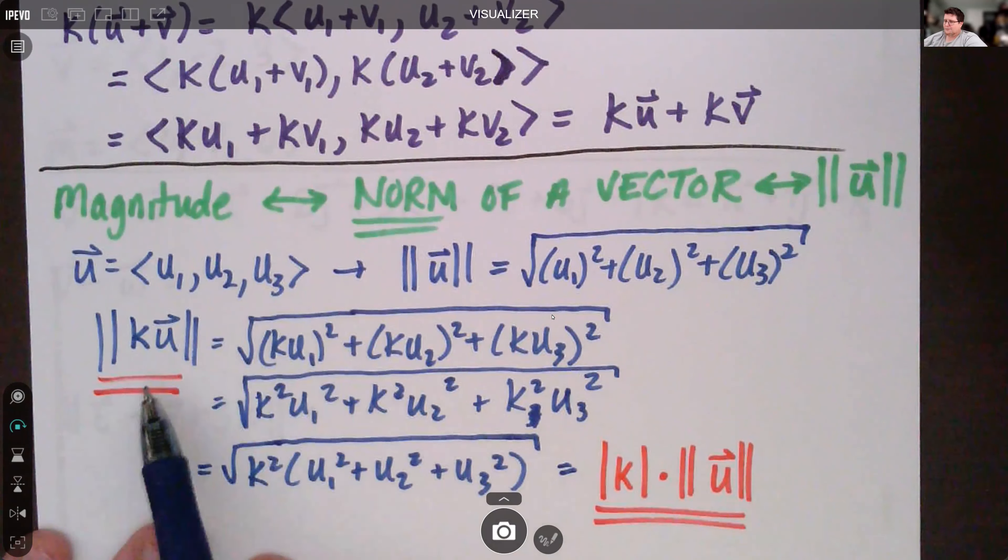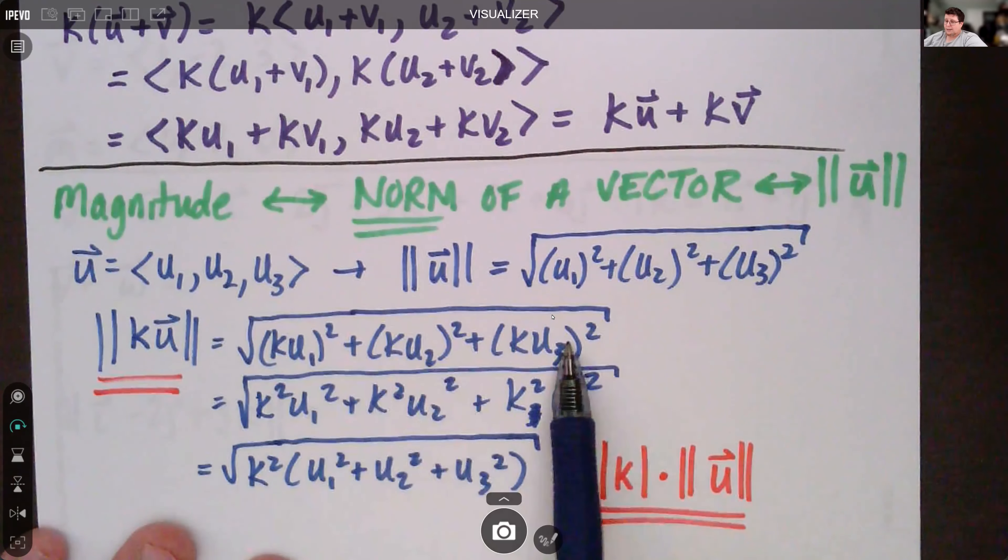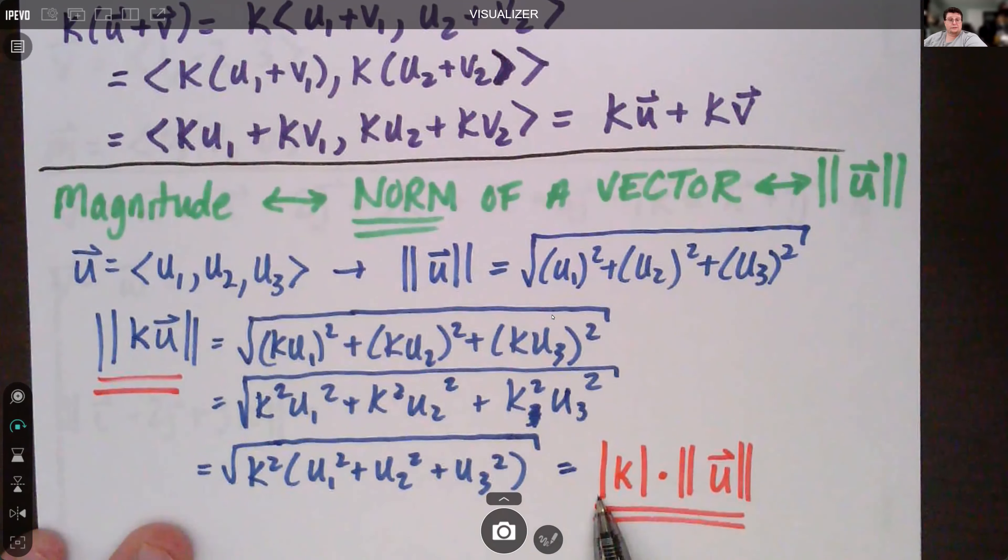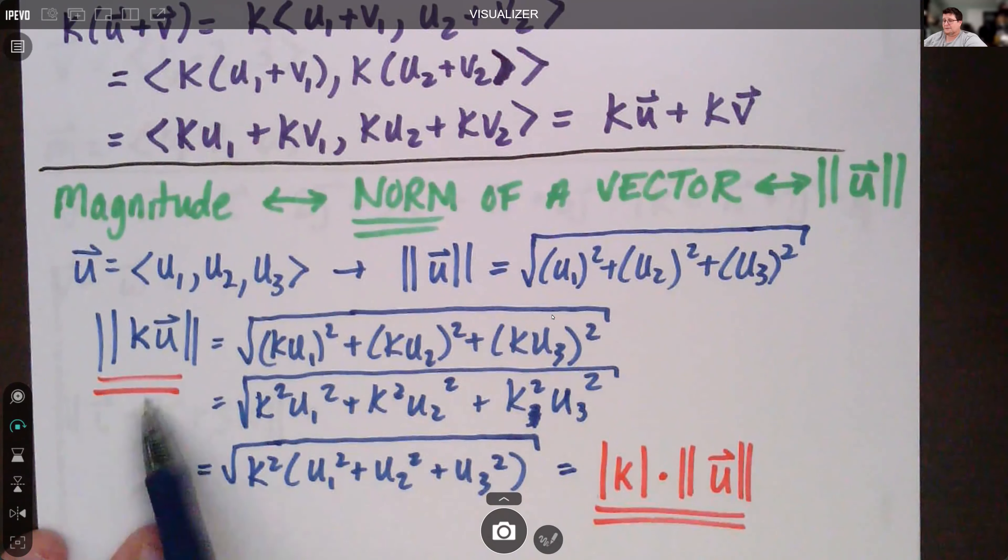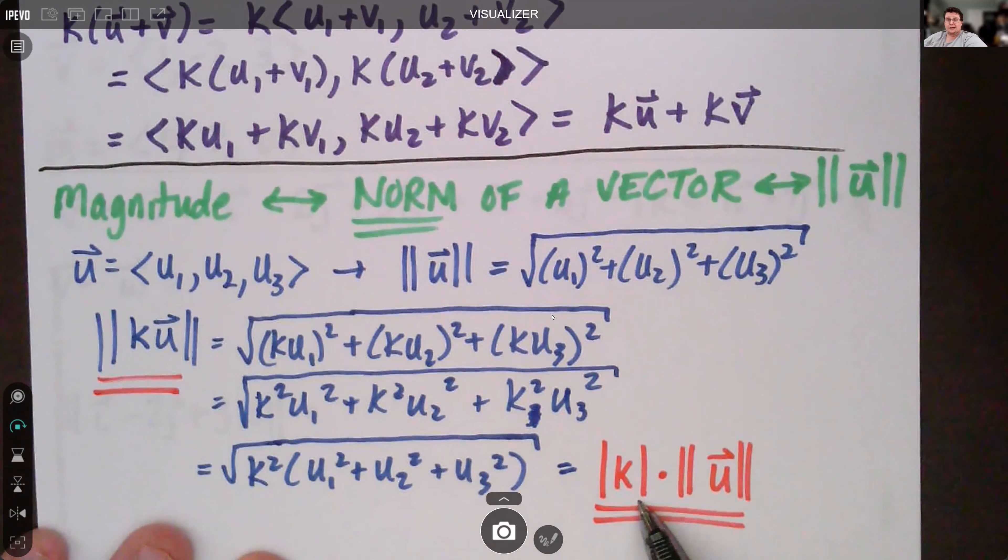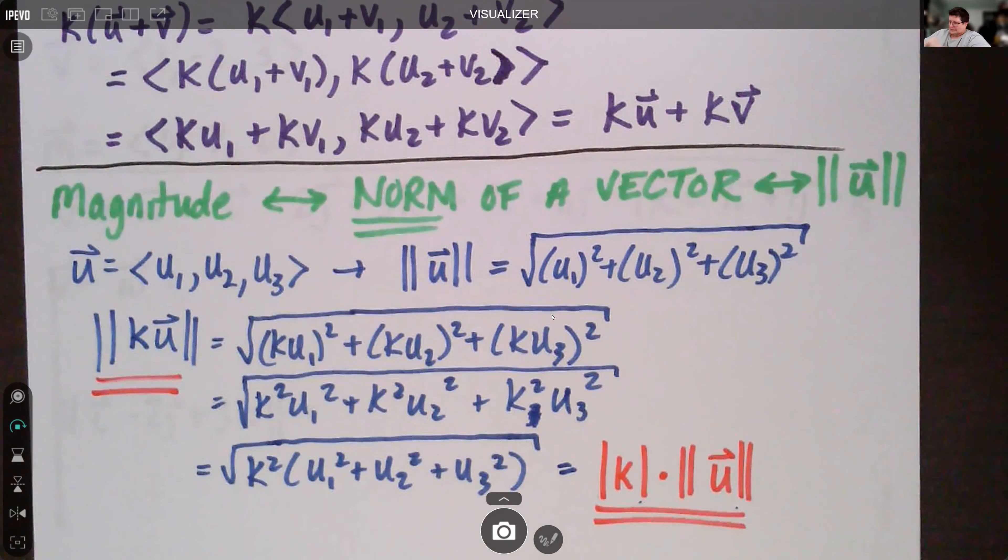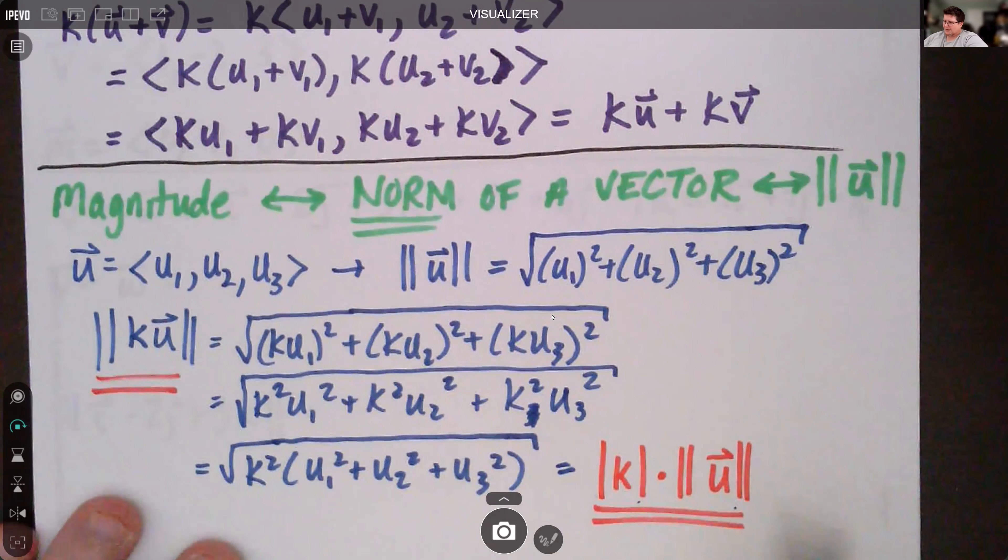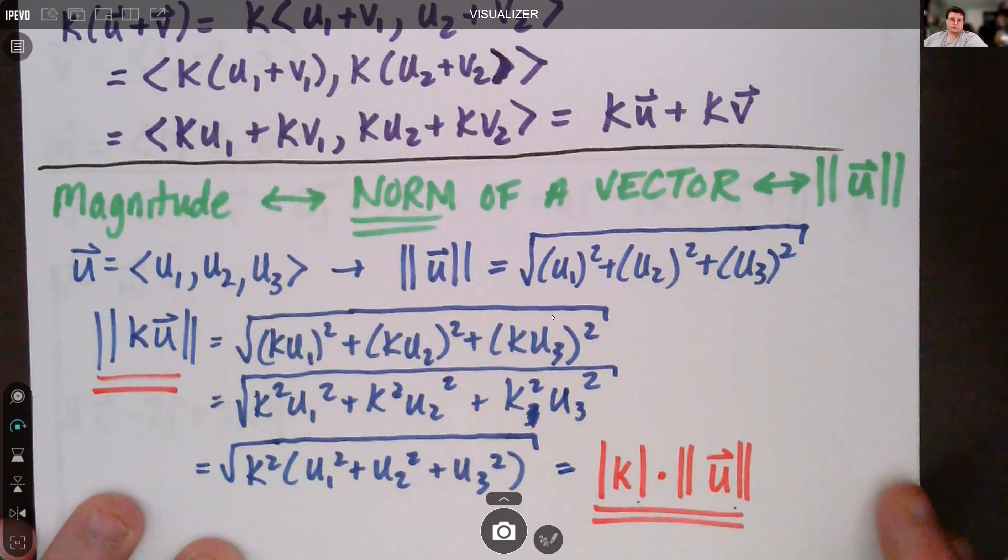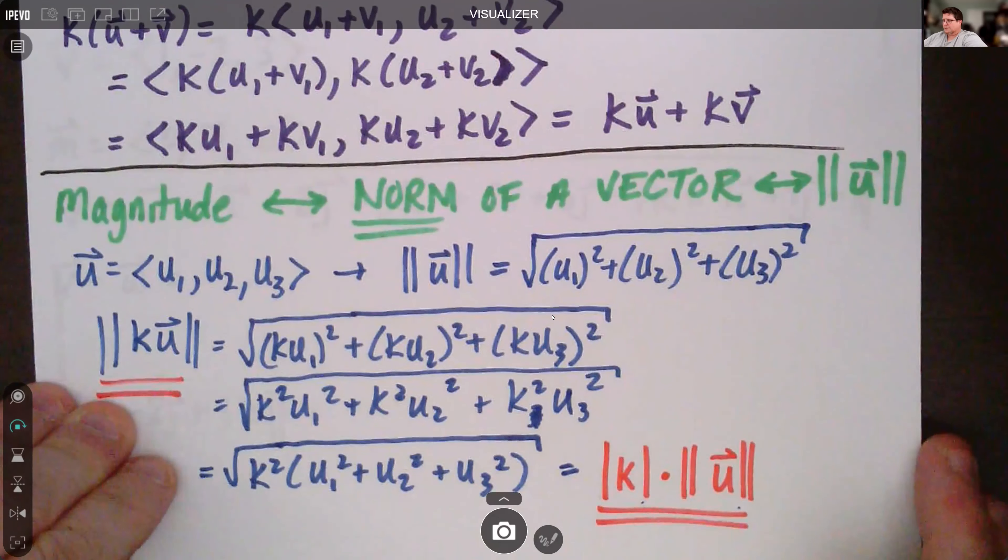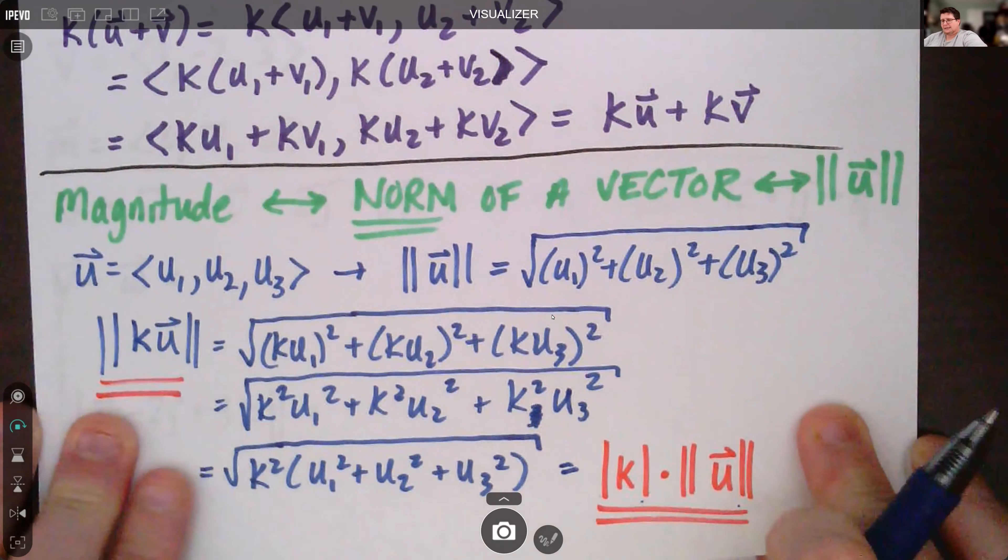We can see that if we do the norm of k times a vector, we go in the case where k gets squared. You can pull it out, so the norm of ku is the same thing as the absolute value of k times the norm of u. And we'll see some things work out with this as we're going through problems. You'll get a lot of practice with magnitude.